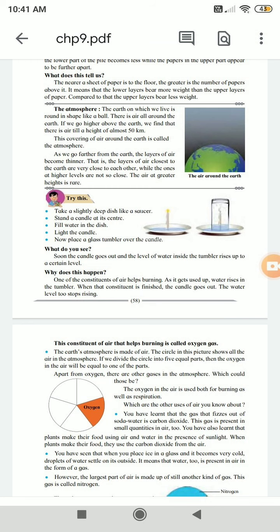The covering of air around the earth is called the atmosphere. As we go further from the earth, the layers of air become thinner. That is, the layers of air closest to the earth are very close to each other while the ones at higher levels are not so close. The air at greater heights is rare.